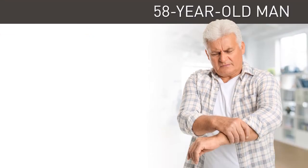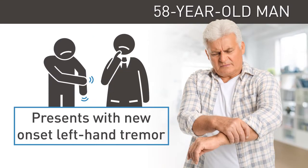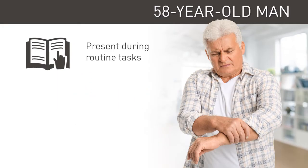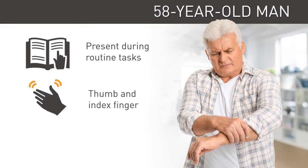An active 58-year-old man presents to the clinic with new onset left hand tremor. He is right-handed and occasionally notices the tremor with routine tasks, such as reading a book. The rhythmic movements affect the fingers on his left hand, most notably his thumb and index finger.